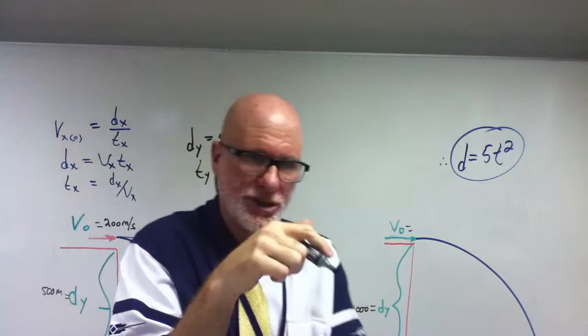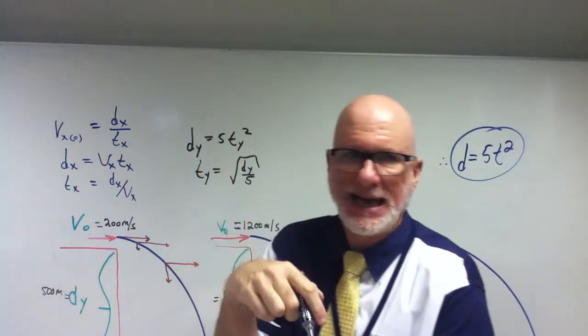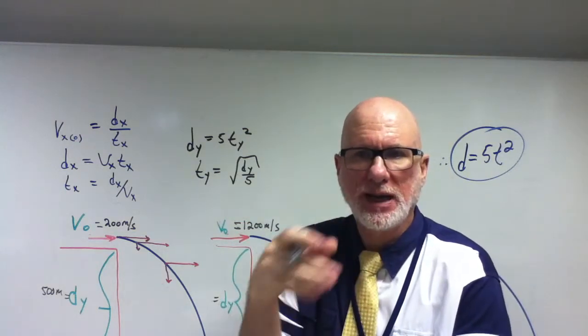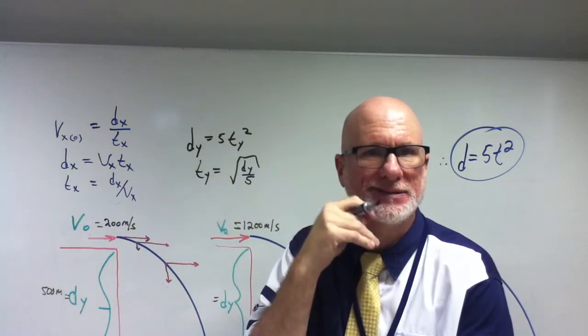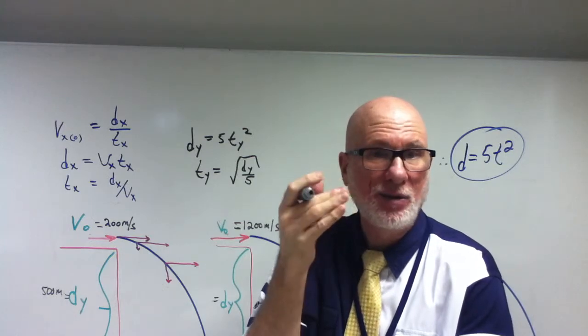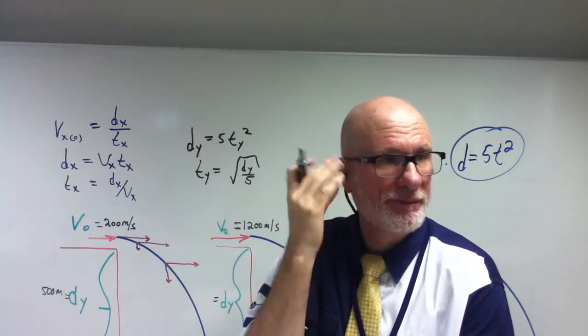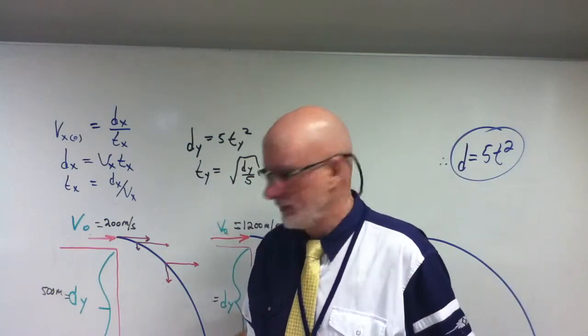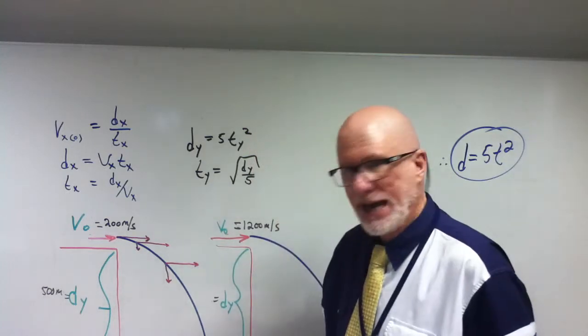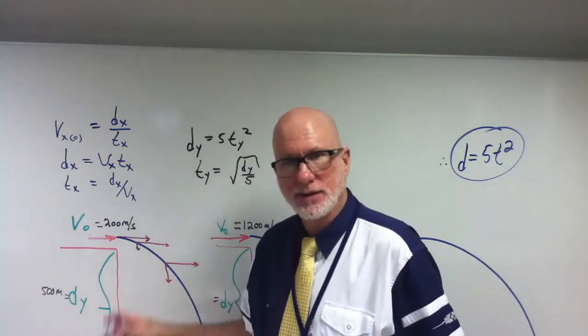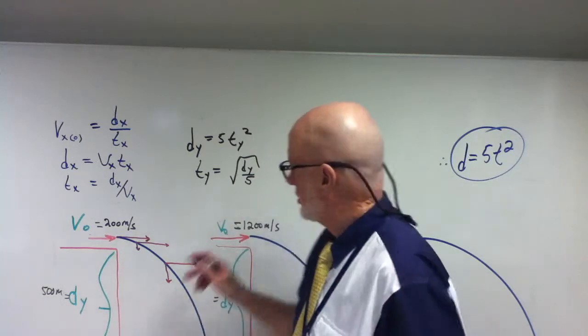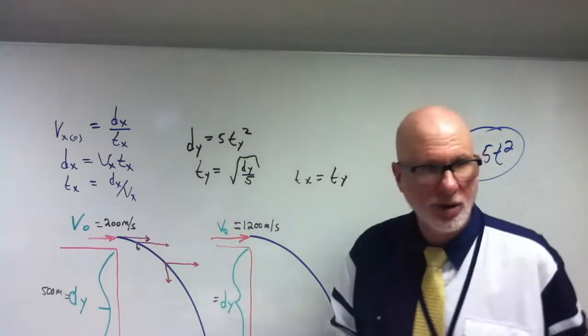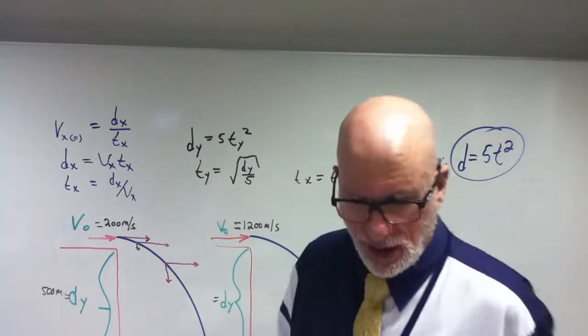Now, what is the relationship between ty and tx? The time in the x direction versus time in the y direction. What's the relationship? The time in the x direction is going to be the same as the time in the y direction, right? So I know that tx equals ty. Very important consideration. Are we ready to begin?